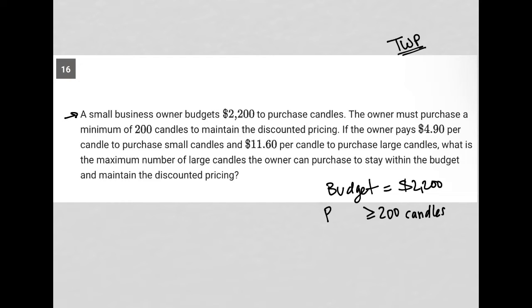If the owner pays, I'll just write purchase. There's too many other words that start with P. So if the owner pays $4.90 per candle to purchase small candles, so $4.90 for small. $11.60 per candle to purchase large candles. So $11.60 for large candles.